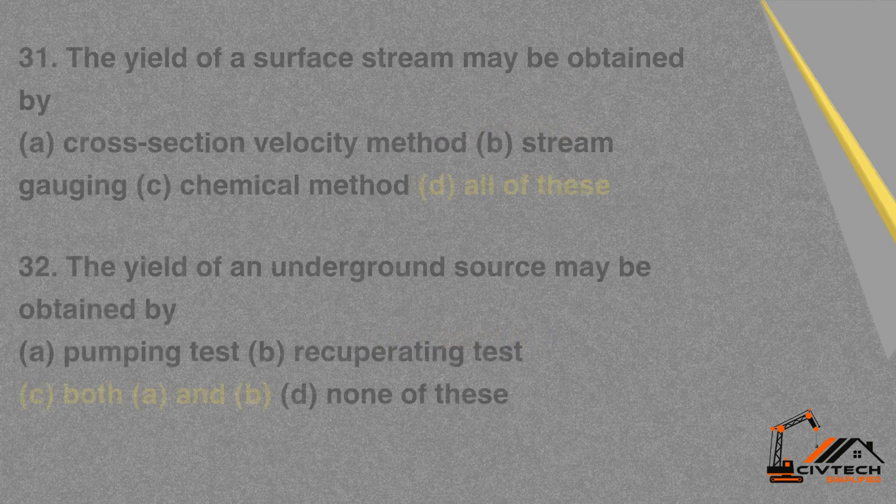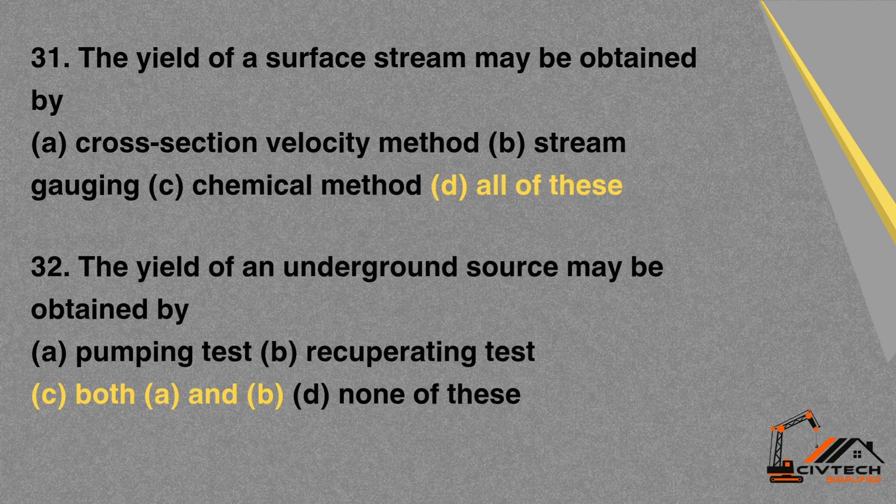MCQ 31: The yield of a surface stream may be obtained by — A. Cross-section velocity method. B. Stream gauging. C. Chemical method. D. All of these. Correct option: D. All of these.